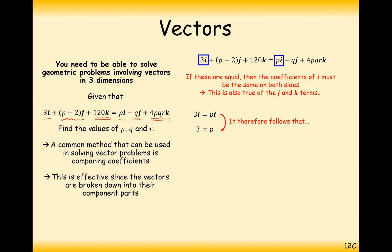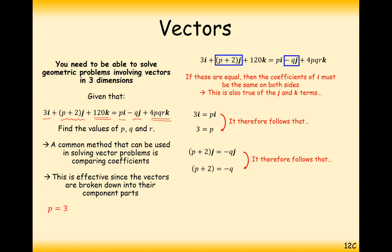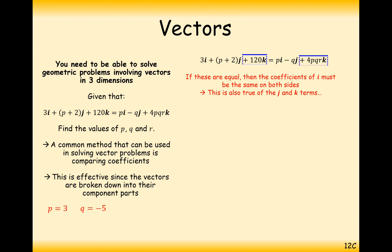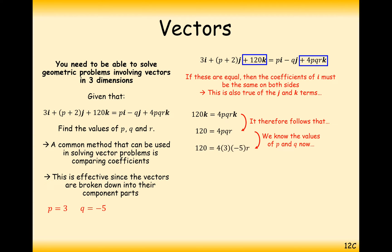Looking at the j component: on the left we get P plus 2, and on the right we have minus Q. Since P is 3, we get 5 equals minus Q, so Q must equal minus 5. For the k component: 120 equals 4PQR. Substituting in our values for P and Q and cancelling the k's on both sides, we get 120 equals minus 60R. Dividing by minus 60, we get R equals 2. This question was as simple as making sure your i's, j's, and k's on the left equal those on the right.